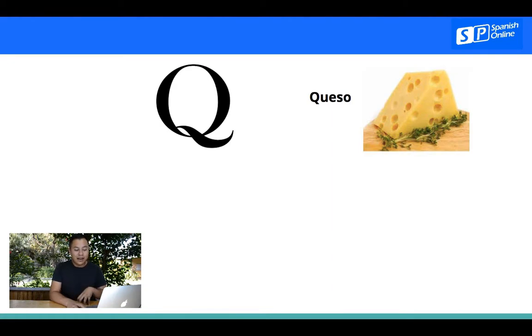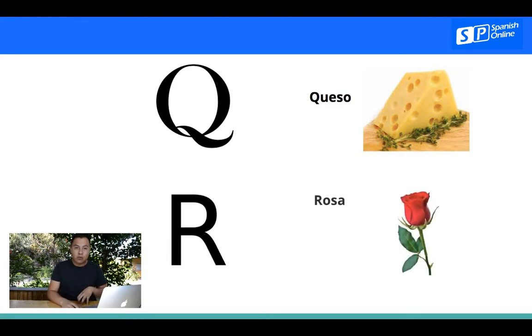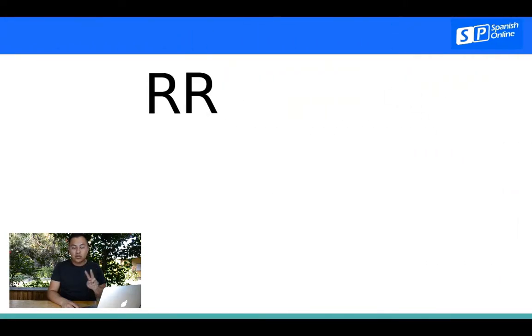La siguiente letra es R, como rosa, and also, también, utilizamos dos R juntas, two R together. So, the example is el perro. In this case, when we talk with one R in Spanish, we say, for example, when I want to say face, in Spanish we say, cara.